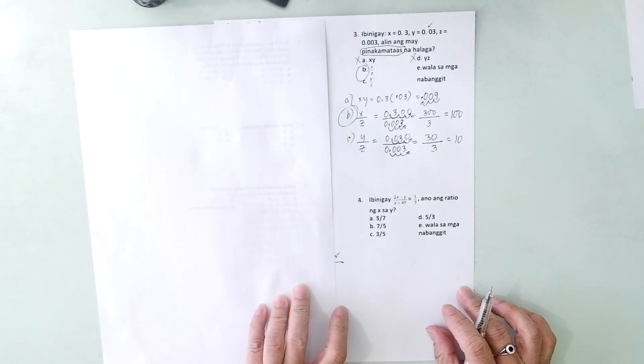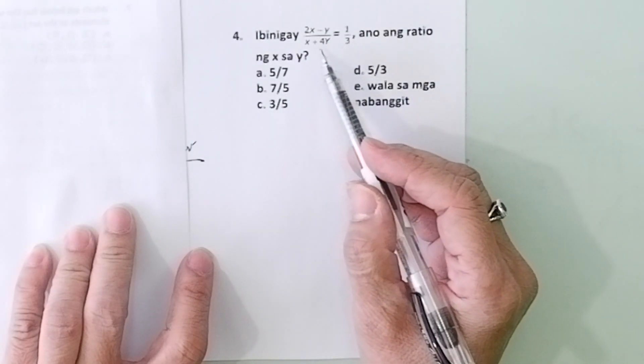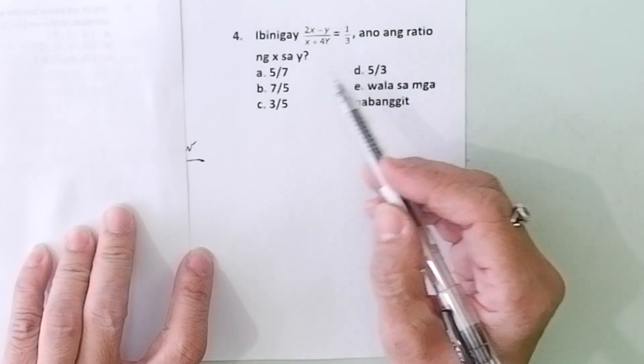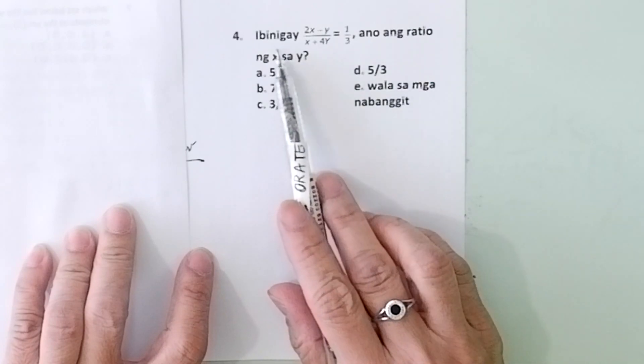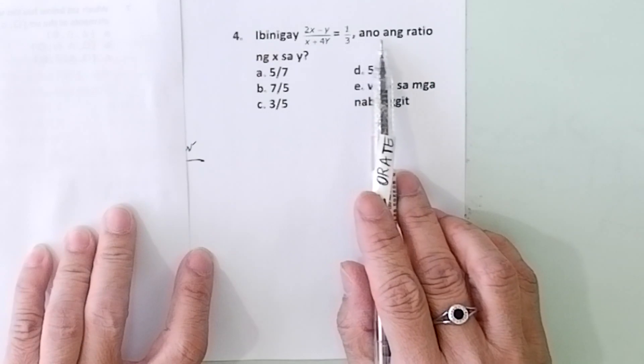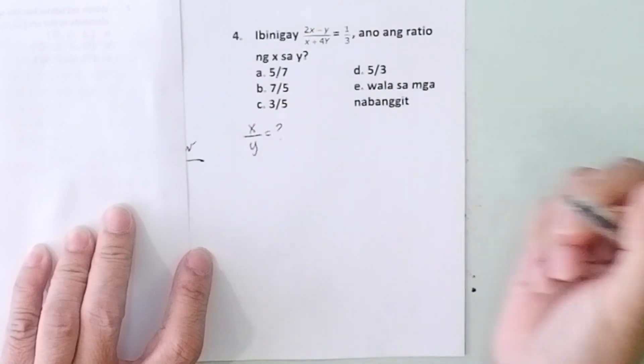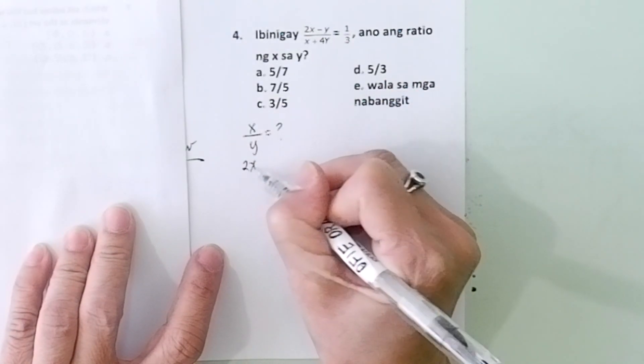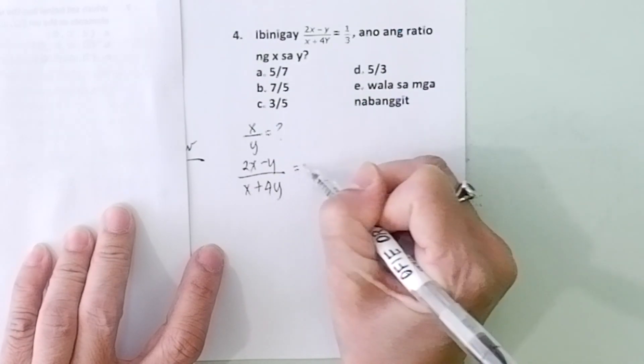Problem number 4: Ibinigay (2x - y)/(x + 4y) = 1/3. Ano ang ratio ng x sa y? In English: Given (2x - y) over (x + 4y) equals one third, what is the ratio of x to y?